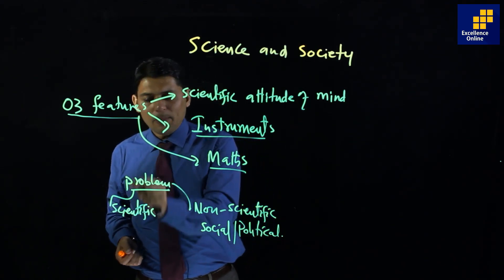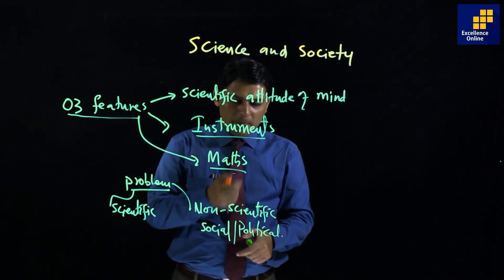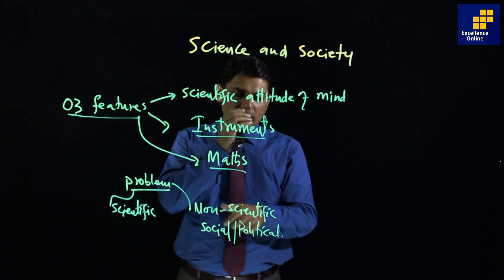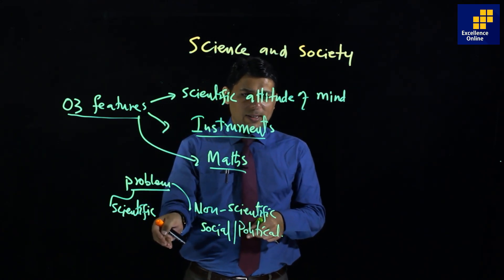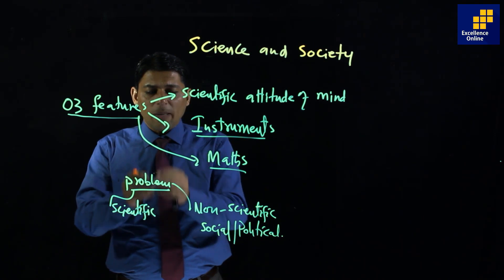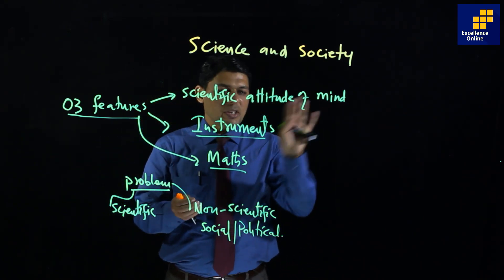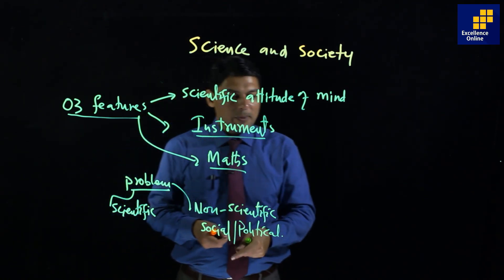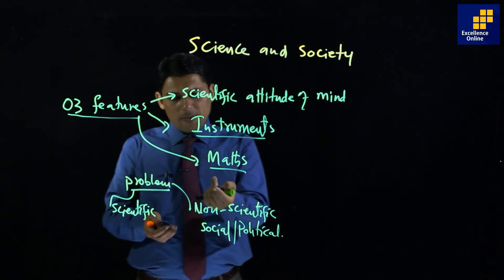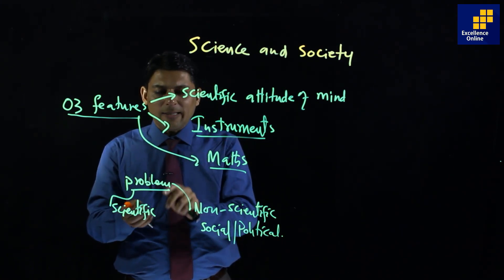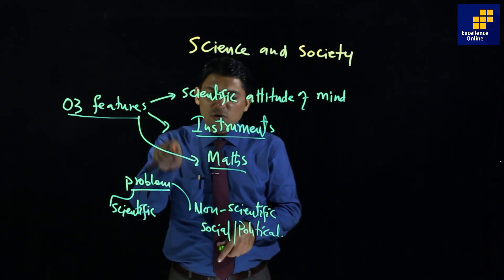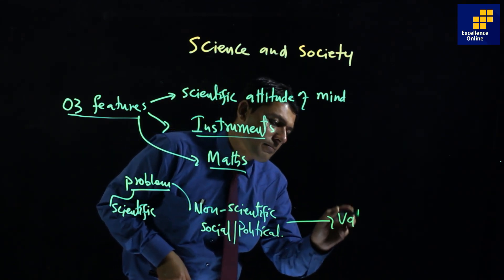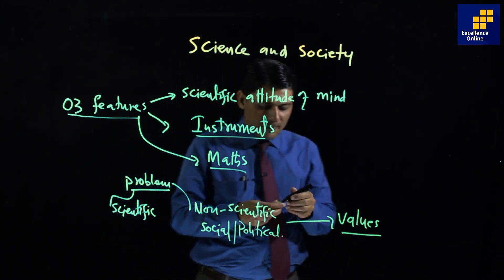A better failure is a social and political problem. Values are important here. For example, two friends are intelligent but dishonest. If you apply the formula of science, will they become honest? No, they cannot. This is about the limitations of science. Science cannot solve social and political problems. We will talk about values.